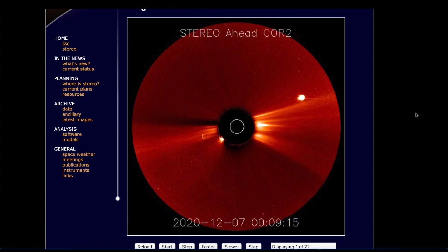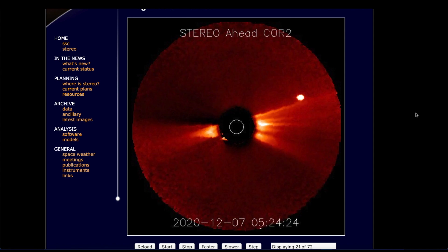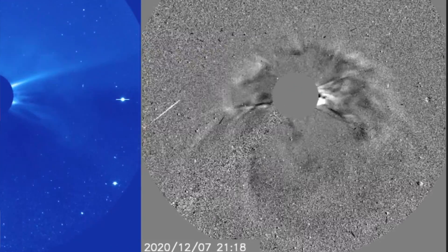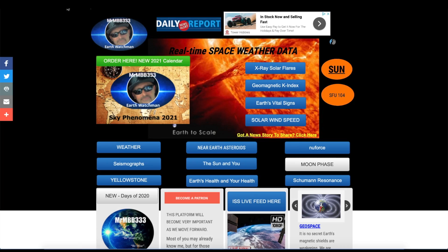We're going to come back and take a look at the possible arrival time of that very large CME that sent a shockwave through the solar system. First, here at the website looking at the Schumann resonance.